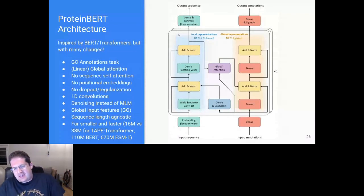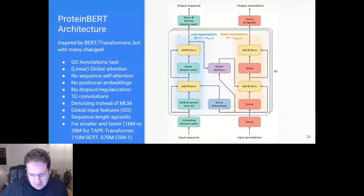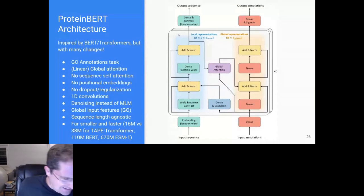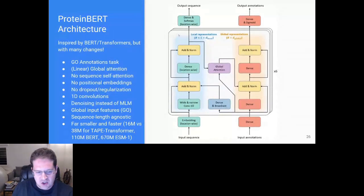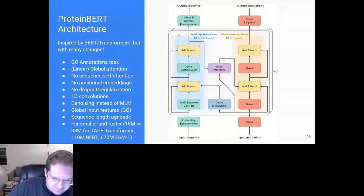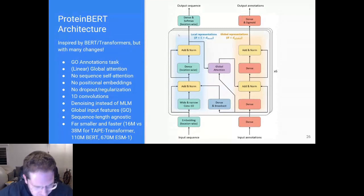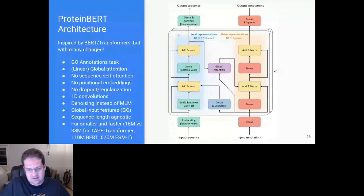A few other technical details. This is how a layer looks in the model. I won't go into, we don't have enough time for it here. I'll just note that some of the other things we did in addition to the alternative attention is the fact that we don't use positional embeddings and we don't use dropout regularization. And we have a denoising task instead of classical masked language modeling for people who are a bit more familiar with the field. And again, very flexible to long sequence and very small, very fast.